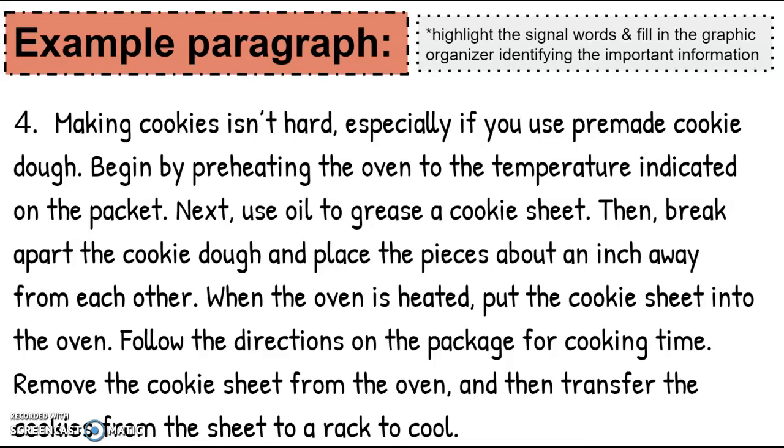Begin by preheating the oven to the temperature indicated on the packet. Next, use oil to grease a cookie sheet. Then, break apart the cookie dough and place the pieces about an inch away from each other. When the oven is heated, put the cookie sheet into the oven. Follow the directions on the package for cooking time. Remove the cookie sheet from the oven and then transfer the cookies from the sheet to a rack to cool.